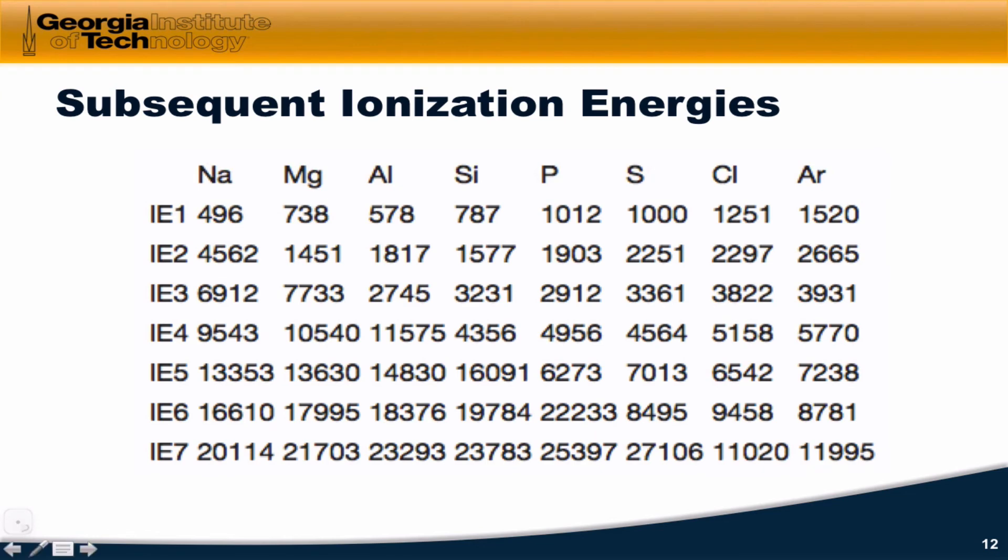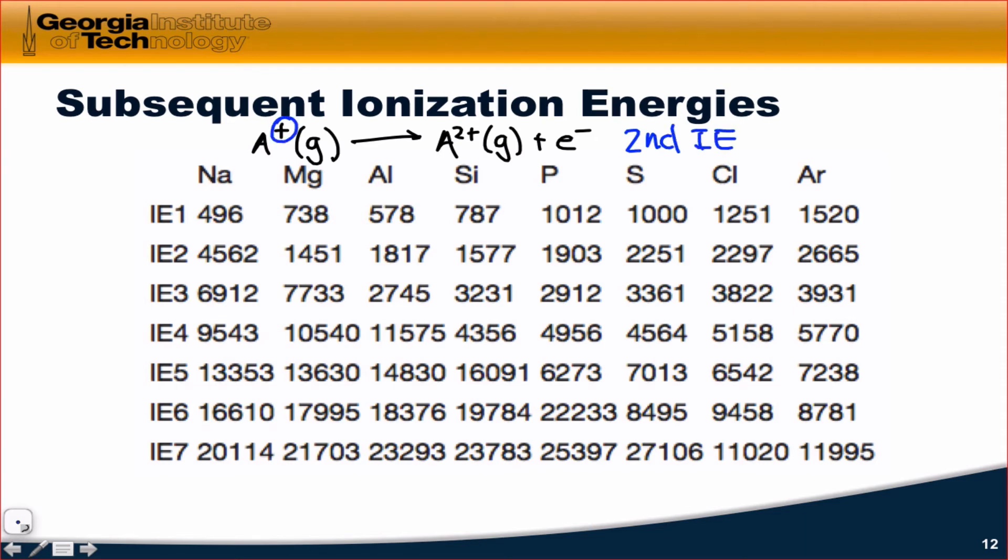We can also look at subsequent ionization energies. So, for example, if we take A+ in the gas phase and bombard it with energy to form A2+, also a gaseous ion, and another electron, this is what we call the second ionization energy. Since we're starting with a cation, we're starting with something that's already lost one electron, and we're ionizing it again.